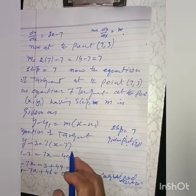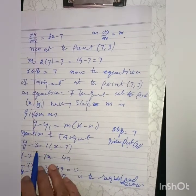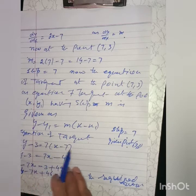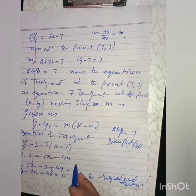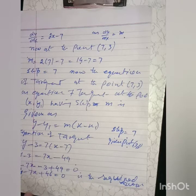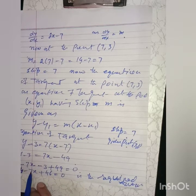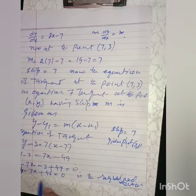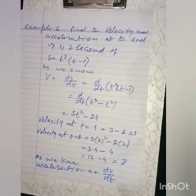The equation of the tangent is y - 3 = 7(x - 7), giving y - 3 = 7x - 49, and therefore y - 7x + 46 = 0, which is the required equation of the tangent.